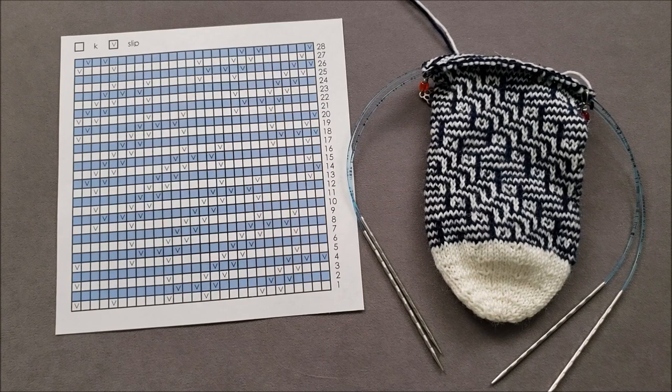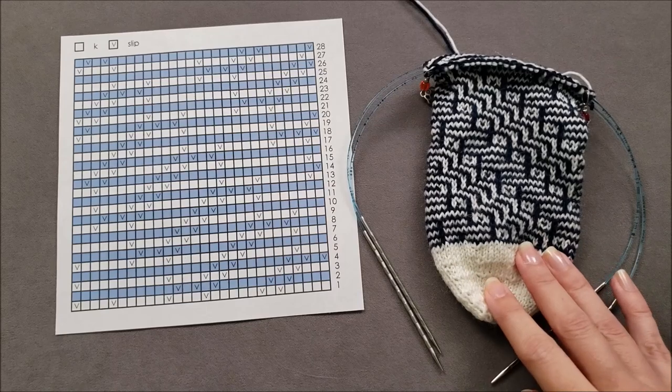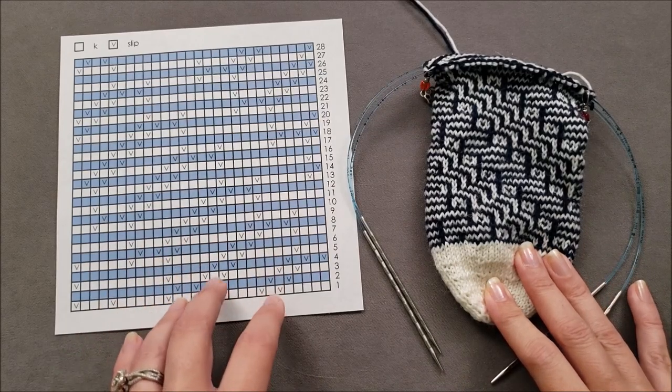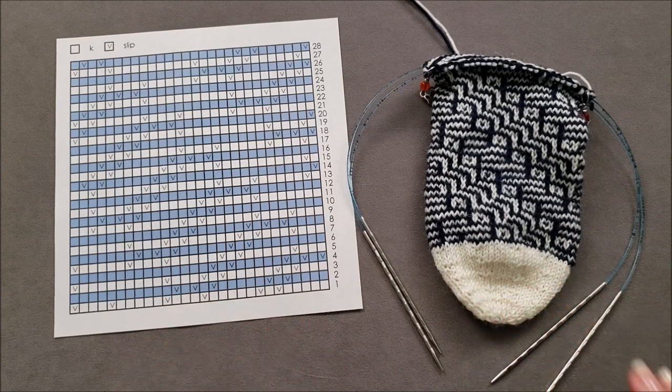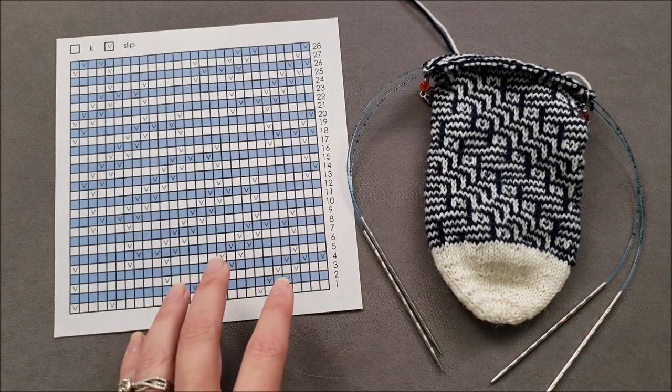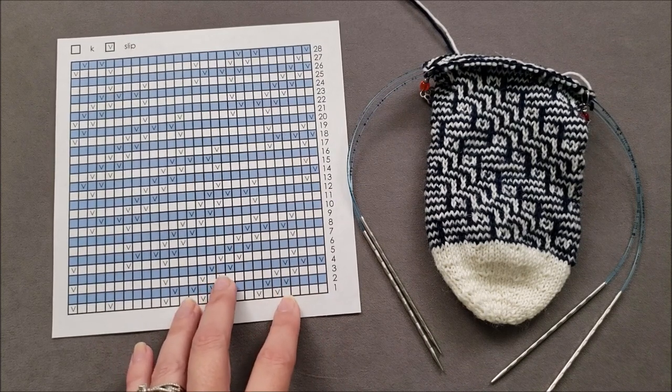Although this chart is fairly easy to follow, it's difficult to see what your finished knitting will look like from the chart, and that can easily lead to mistakes. Generally, I use charts like this for much more simplistic mosaic motifs.